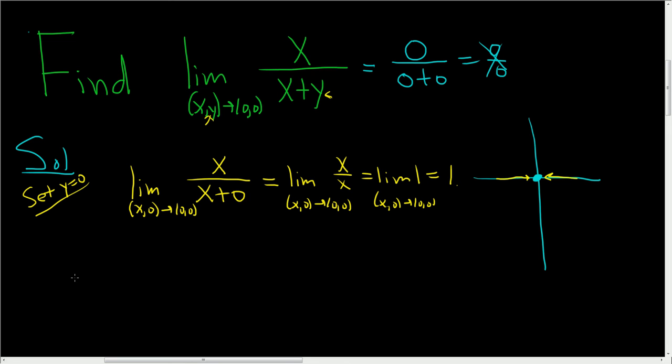If we can find a different answer by approaching from a different path, then the limit does not exist.